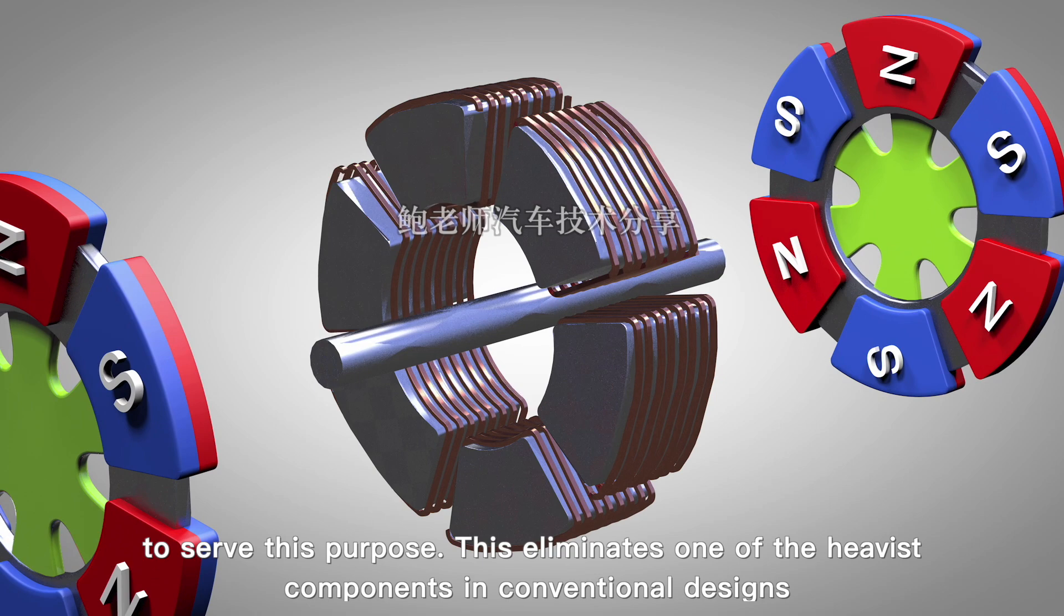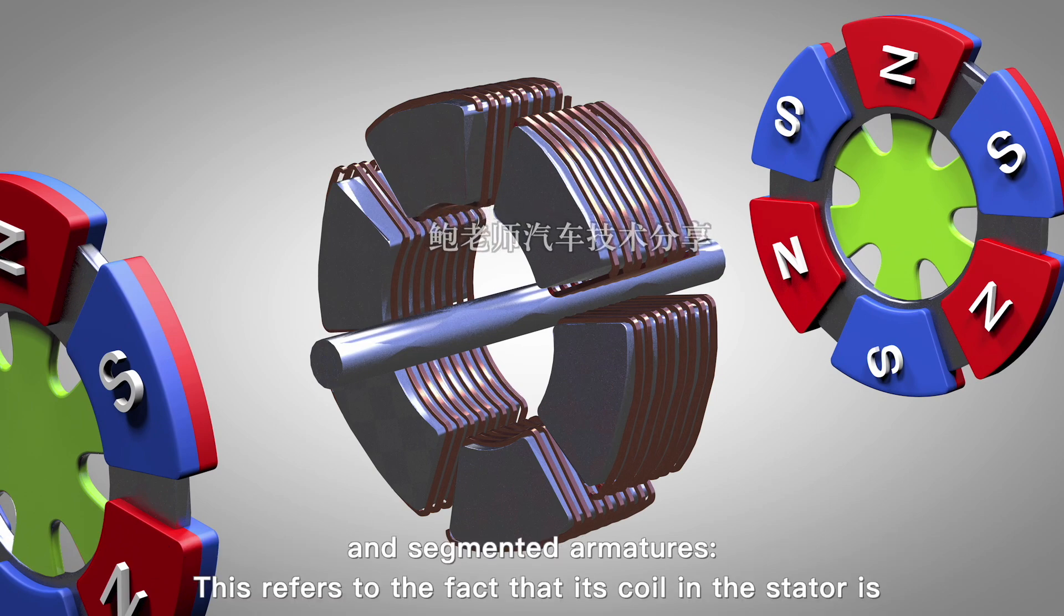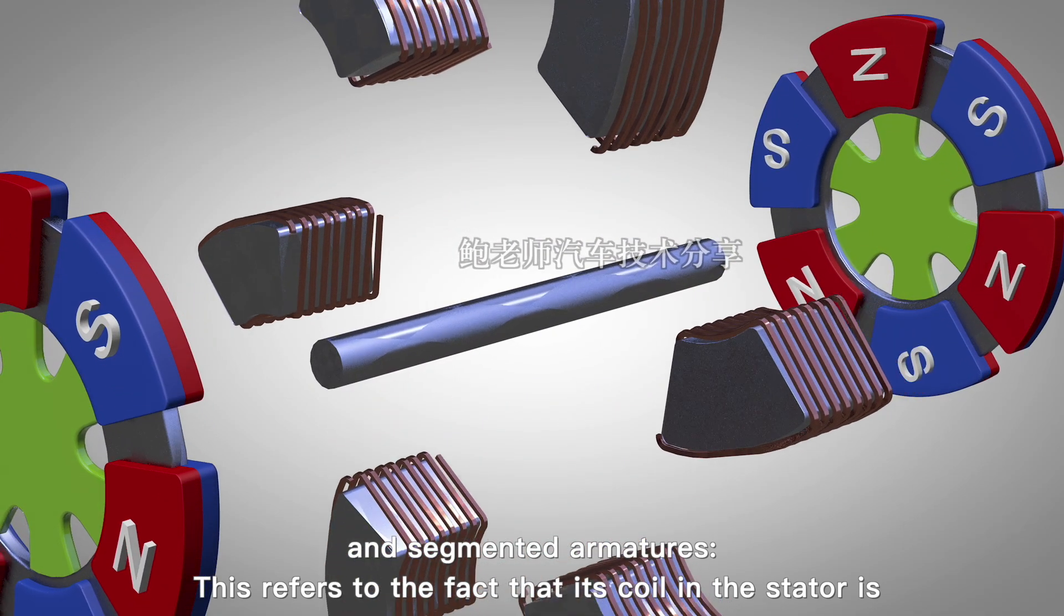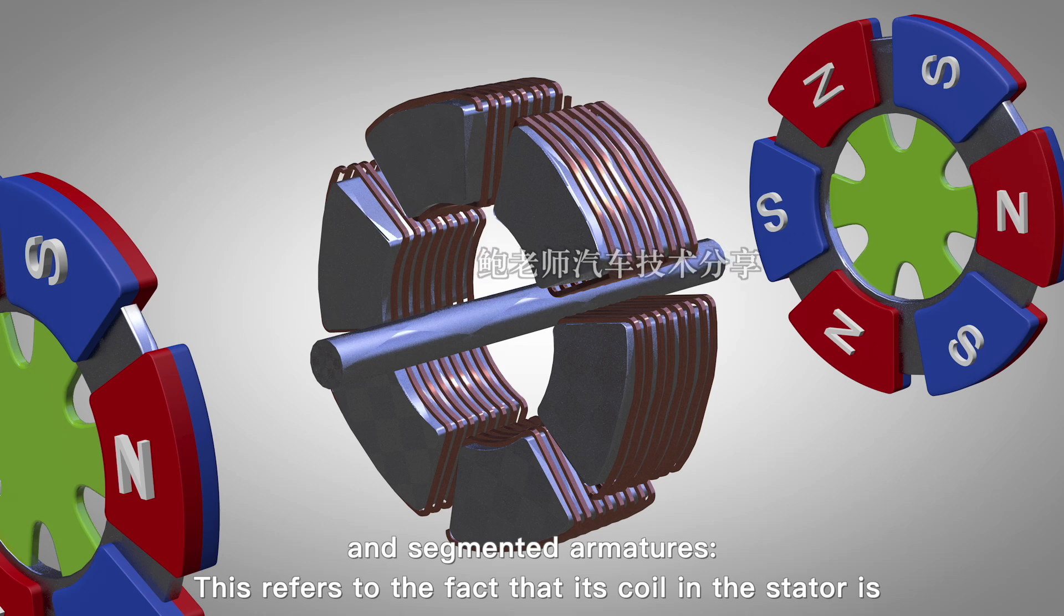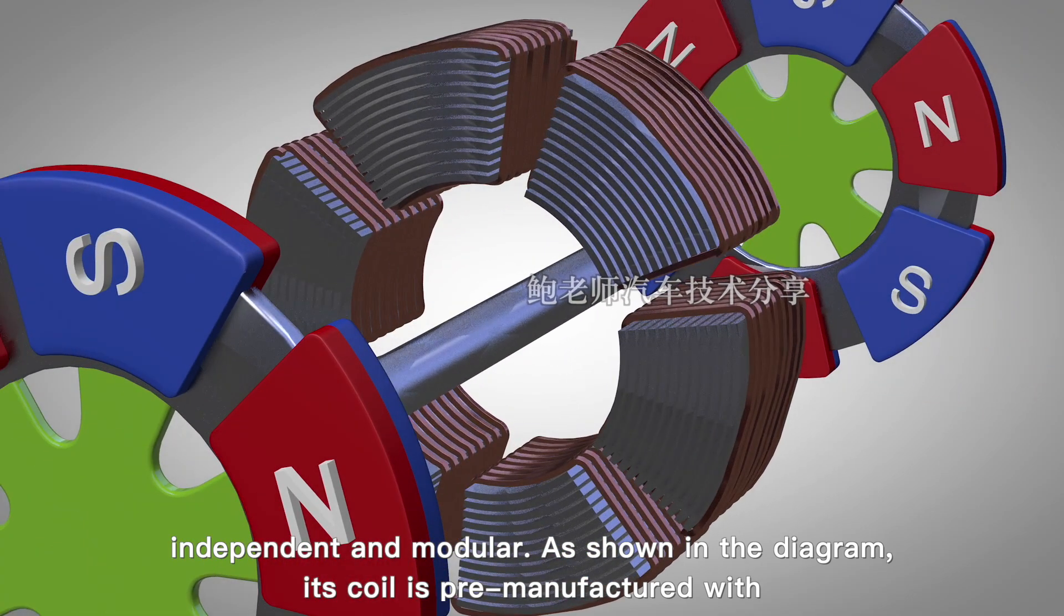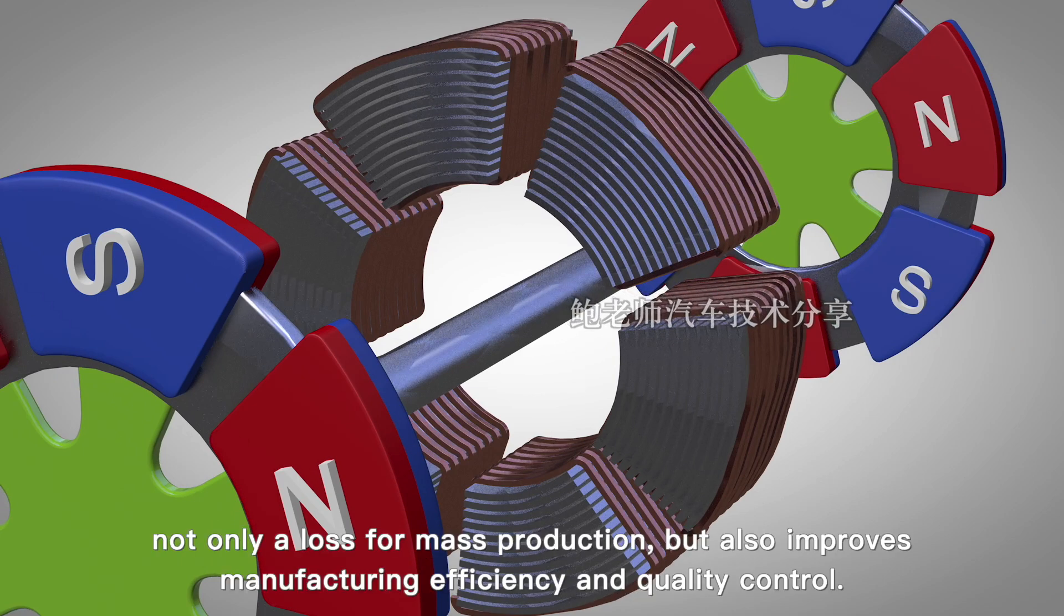This eliminates one of the high-waste components in conventional designs. And segmented armature? This refers to the fact that each coil in the stator is independent and modular. As shown in the diagram, each coil is pre-manufactured, which not only allows for mass production but also improves manufacturing efficiency and quality control.